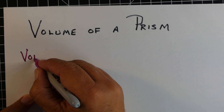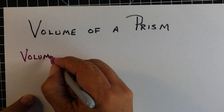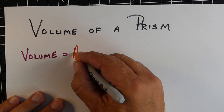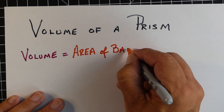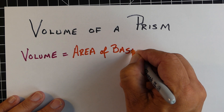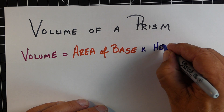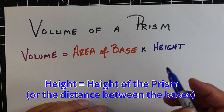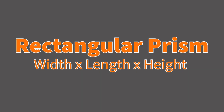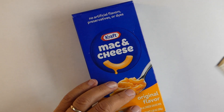Now we're going to talk about the volume of a prism and the formula to get this. To find the volume, we're going to take the area of the base — whatever your base is — and multiply that by the height of the prism. I like to think of it as the distance between the two bases. So for a rectangular prism, we're going to go width times length times height.